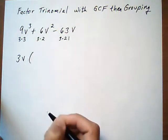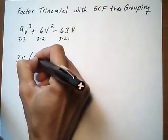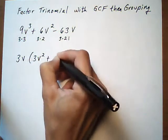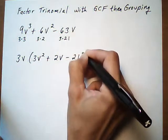So let's go ahead and take out the GCF, 3V, and then the leftovers are going to be 3V squared plus 2V, take away 21.